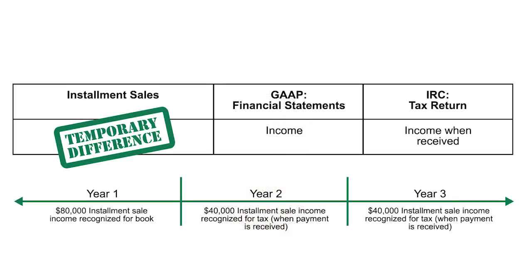Installment sales: on the financials, you would debit accounts receivable and credit revenue — it's immediately income, even though they're not going to pay you until later. But on a tax return, you are electing to report the income only when you receive the money. So it's income later, and it winds up also as an M1 adjustment.